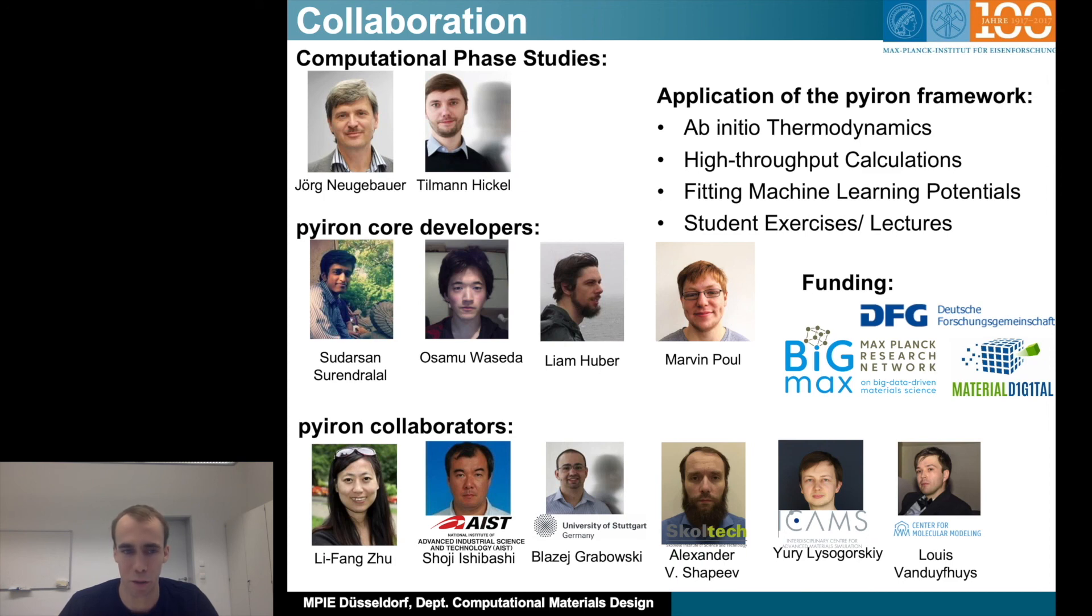Also I wanted to thank the Pyron developers. So Li-Fang Zhu, she was the main person on the melting point project. Shoji Ishibashi, who used machine learning potentials to calculate the melting points for iron. Osamu Waseda and Blazej Grabowski, who initially worked on the thermodynamics interfaces. Alexander Shapeev developed the moment tensor potentials, so these are the machine learning potentials we use. And Yury Lysogorskiy, who is doing a lot of high-throughput studies for interatomic potentials, where he helped us to develop this kind of upscaling ability. And Luis Barroso-Luque, who was the first to apply Pyron in a lecture setting and really giving students the ability to develop their exercises.